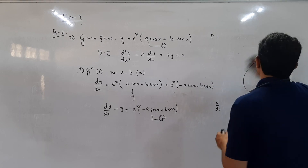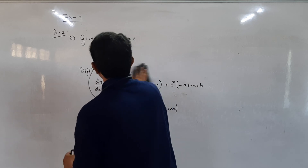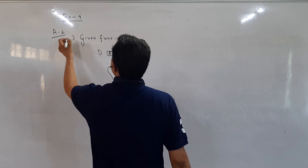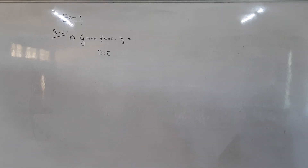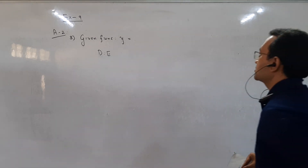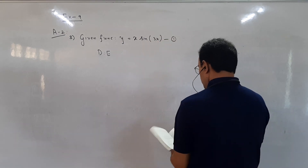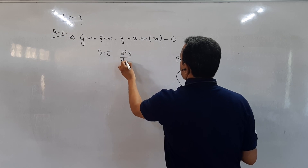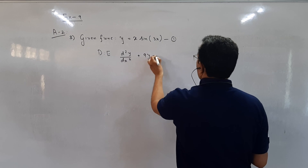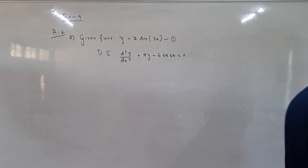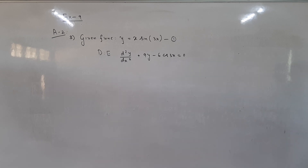Now students, we are doing part 3 of main question 2. The function is y equals x·sin(3x), which we label as equation 1. The differential equation is d²y/dx² plus 9y minus 6·cos(3x) equals 0. All of you concentrate and try to understand how to do this sum.